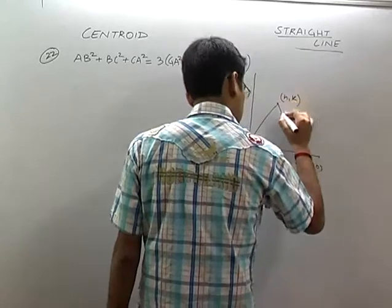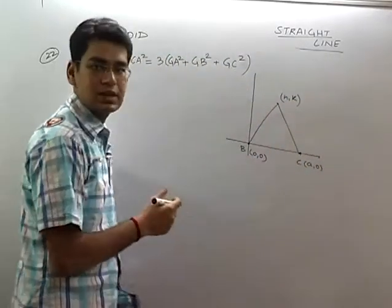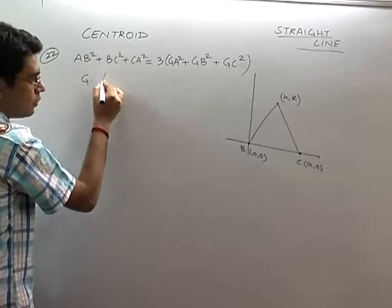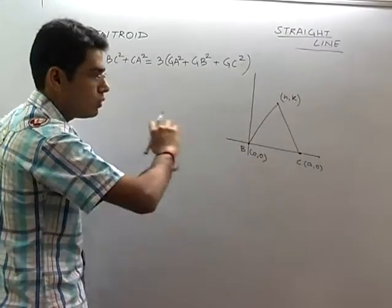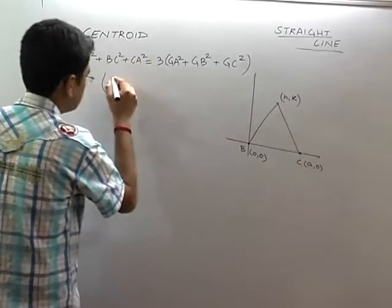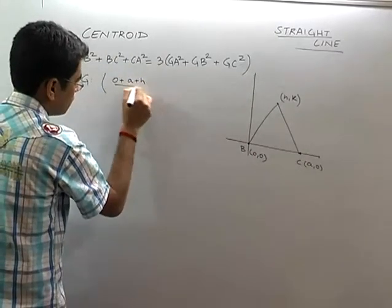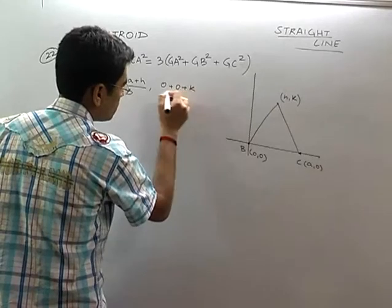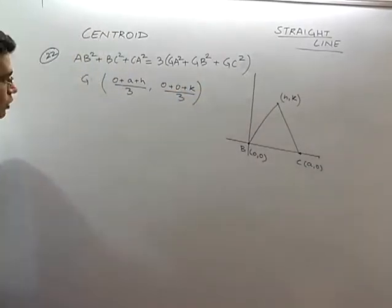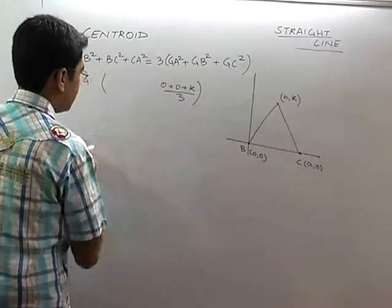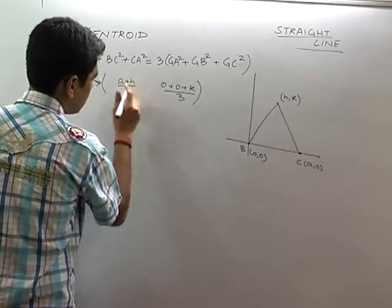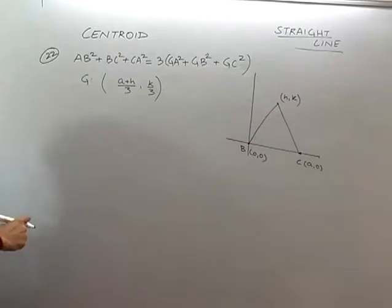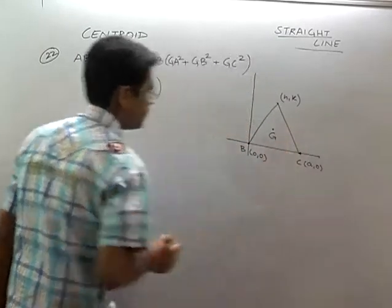So, G is the centroid. We take three x-coordinates: 0, a, h — add them and divide by 3, giving (a+h)/3. For the y-coordinates: 0, 0, and k — add them and divide by 3, giving k/3. So the centroid G comes out to be ((a+h)/3, k/3).